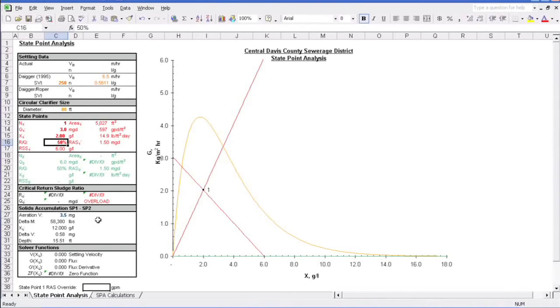As we mentioned earlier, a lower RAS flow results in a flatter underflow rate line, so let's change that. In this case, we can drop our RAS to about 30% or 0.9MGD and still be under the line. Does this mean we should always drop the RAS down such that we are as close to the settling curve as possible? Actually, no.